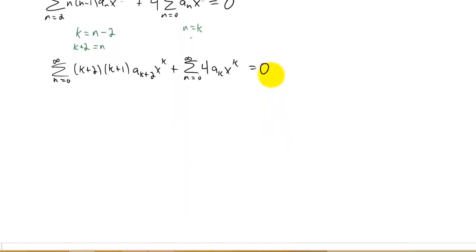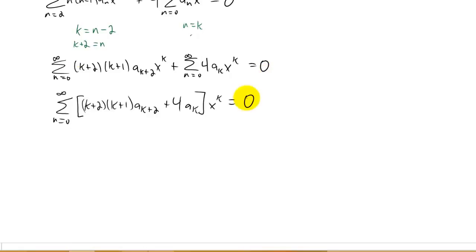Now we're ready to combine these two sums into one. There it is right there. We combine the two sums into one, and I factored an x to the k power out of each one of the terms in the summation. In order for this whole summation to equal zero, each one of these coefficients is going to have to equal zero.